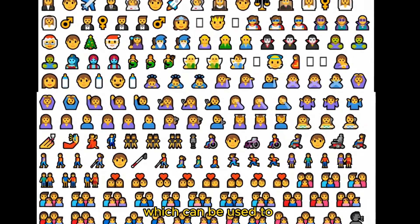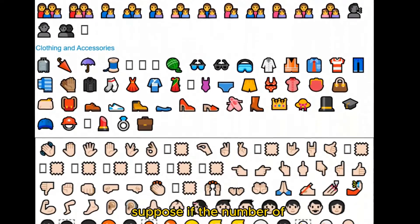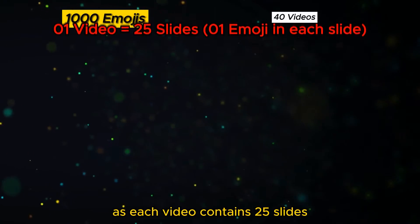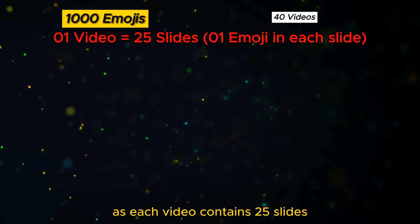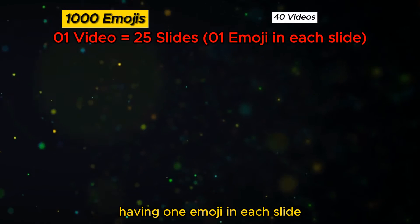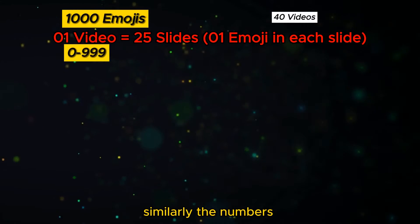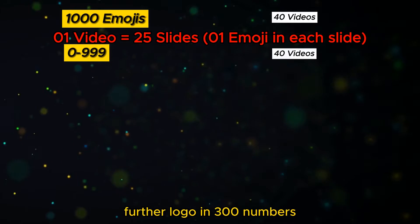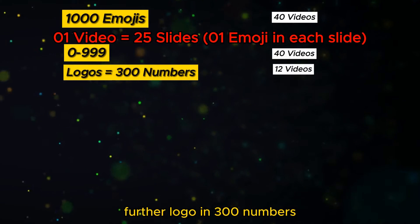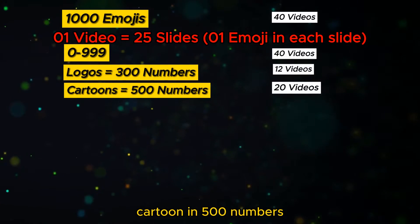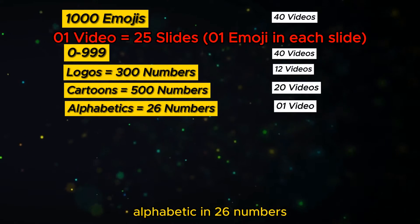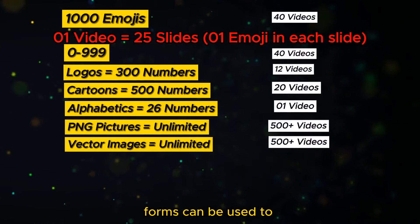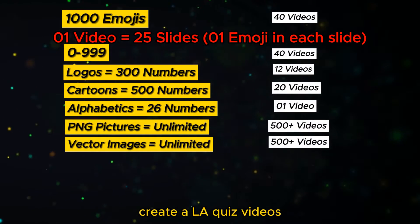There are a lot of emojis available on the internet which can be used to generate this type of video. If the number of available emojis is 1000, we can make 40 videos, as each video contains 25 slides with one emoji per slide. Similarly, numbers from 0 to 999, logos, 300 cartoon numbers, 26 alphabetic characters, and unlimited PNG pictures and vector images can be used.